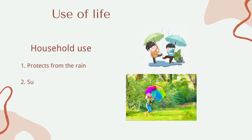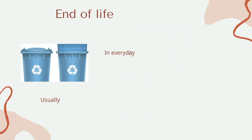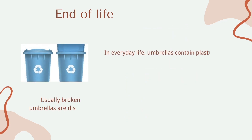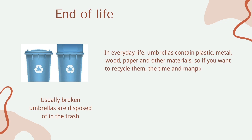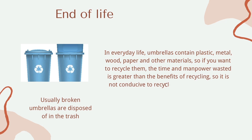For use of life, the main purpose of an umbrella in everyday life is to protect you from the rain and the sun on sunny days. For end of life, usually broken umbrellas are disposed of in the trash. Umbrellas contain plastic, metal, wood, paper, and other materials, so if you want to recycle them, the time and manpower wasted is greater than the benefits of recycling, making them not conducive to recycling. Umbrellas are also not harmful to the human body.